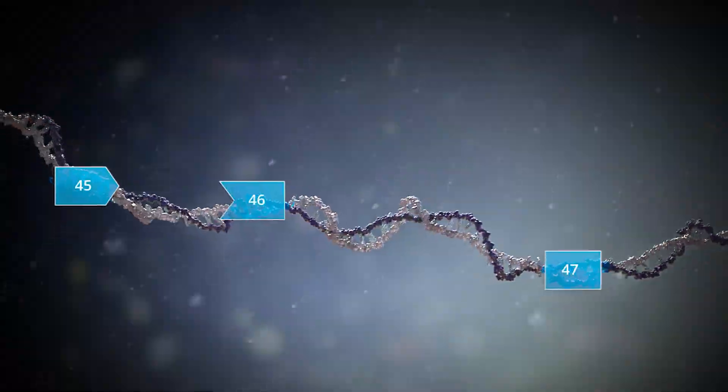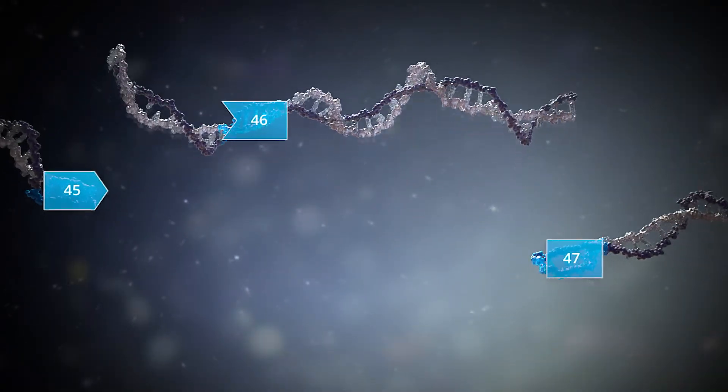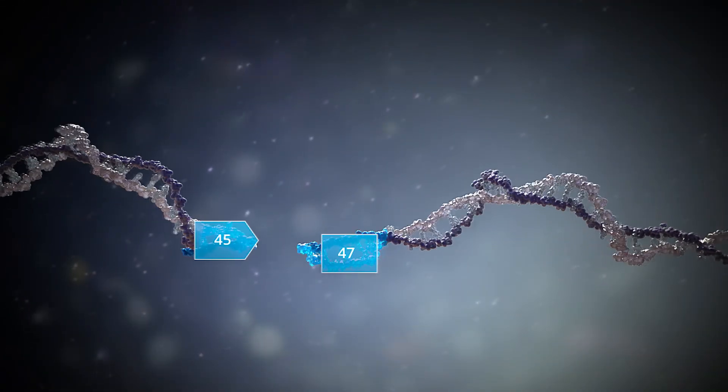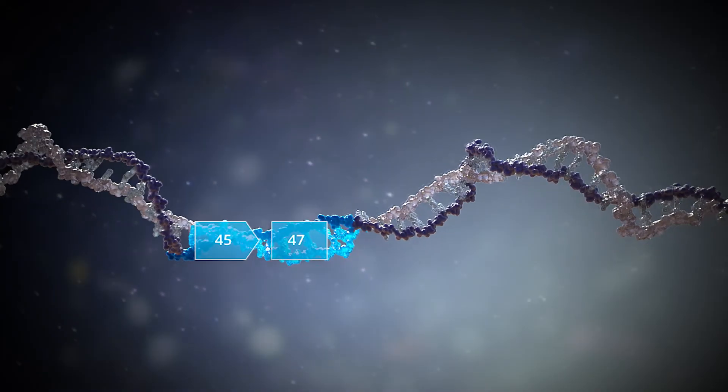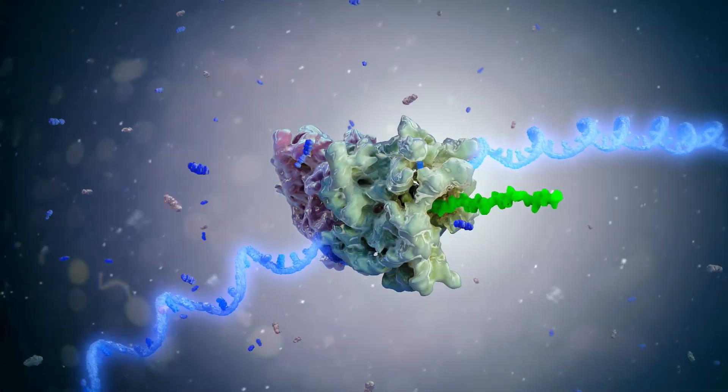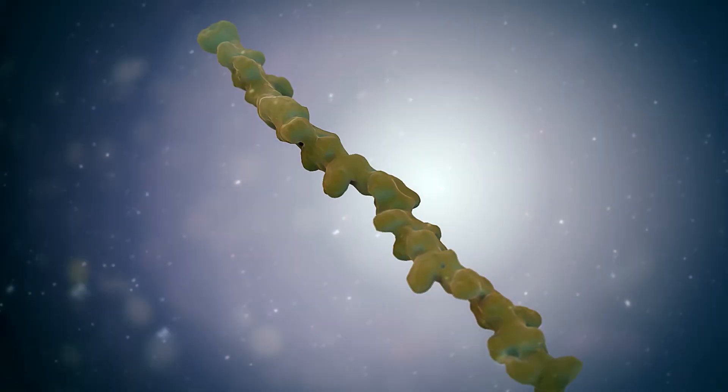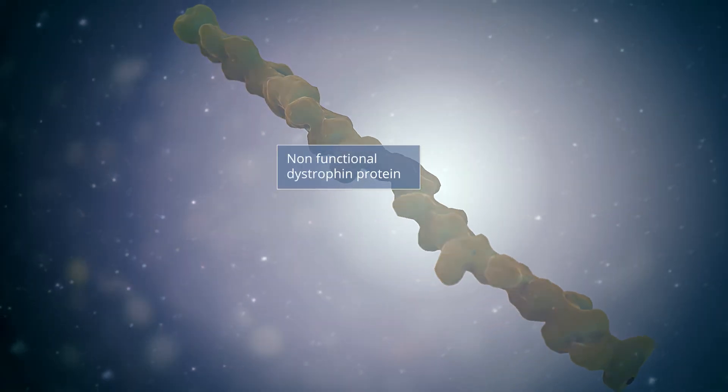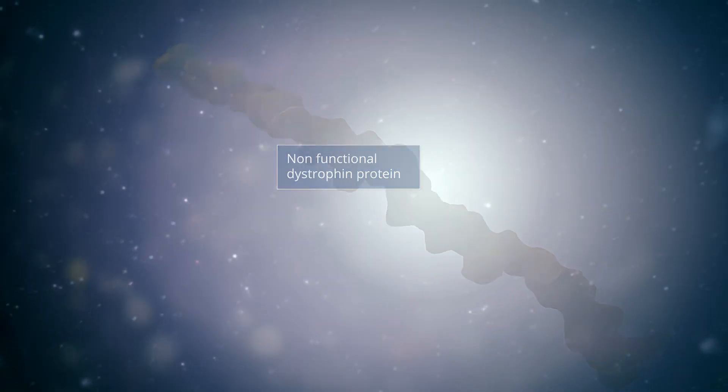Most commonly, DMD is caused by frameshift mutations due to deletions of one or more exons from the dystrophin gene. In these cases, the exons following the deletion are misaligned or out of frame, preventing translation of a functional dystrophin protein.